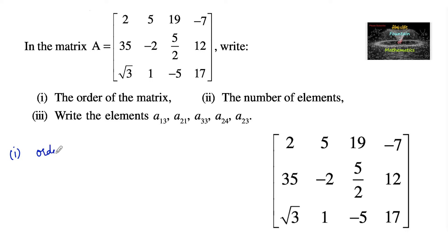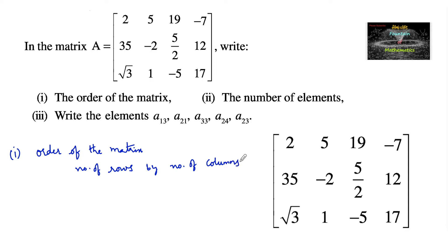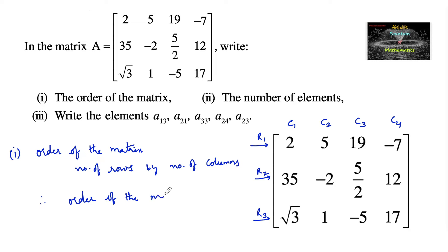The order of the matrix is defined by number of rows by number of columns. In the given matrix we have row 1, row 2, and row 3 — three rows — and column 1, column 2, column 3, and column 4 — four columns. Therefore the order of matrix A is 3 by 4.